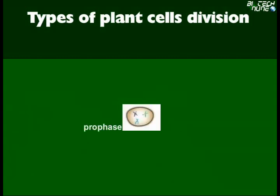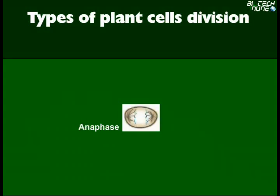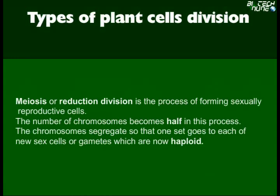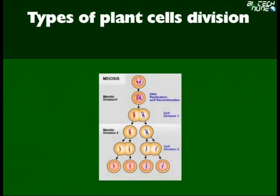In prophase, chromosomes replicate to form chromatids. In metaphase, chromatids line up along the center. In anaphase, chromatids pull apart and move toward the poles. In telophase, the nucleus divides into two cells. Meiosis, or reduction division, is the process of forming sexually reproductive cells. The number of chromosomes becomes half in this process. The chromosomes segregate so that one set goes to each new sex cell or gamete, which are now haploid. Here is the representation of the entire process of meiosis, consisting of meiotic division 1 and meiotic division 2.